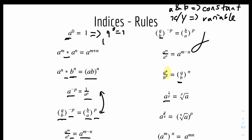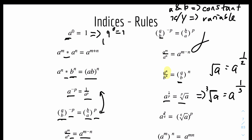Then we have: A to the power of 1 over P equals the P-th root of A. This is basically converting a square root or cube root to index form. For example, the cube root of A equals A to the power of 1 over 3, and the square root of A equals A to the power of 1 over 2. It's quite straightforward.